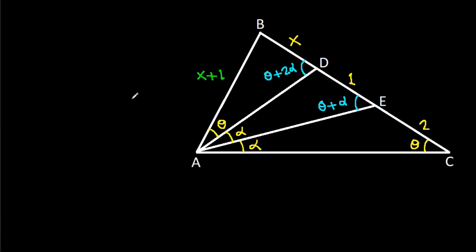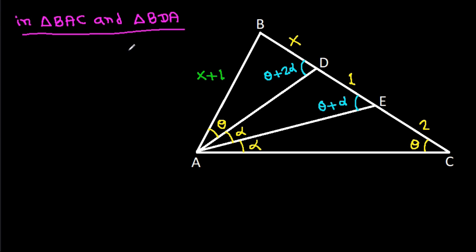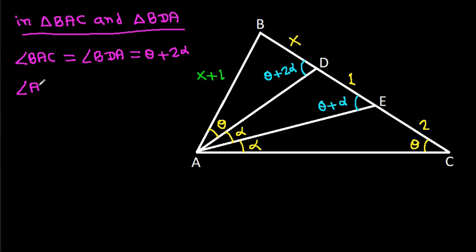Now, angle BAC and angle BDA — we have angle BAC equal to angle BDA, which is theta minus 2 alpha. And angle ABC equals angle DBA, which is common.